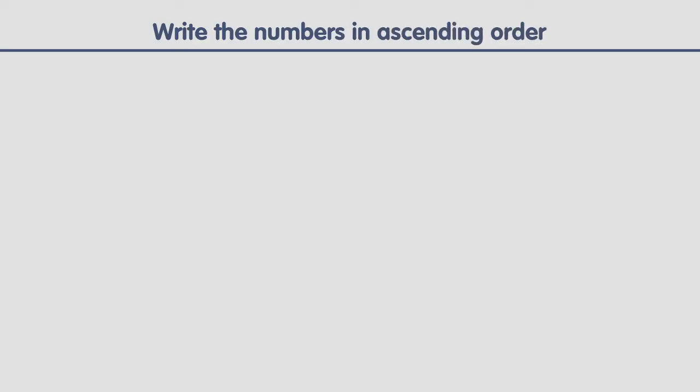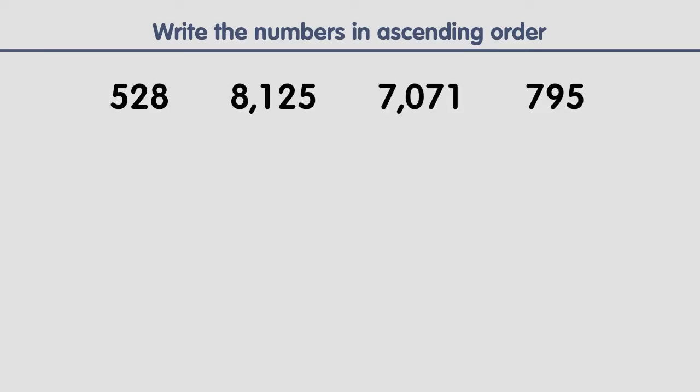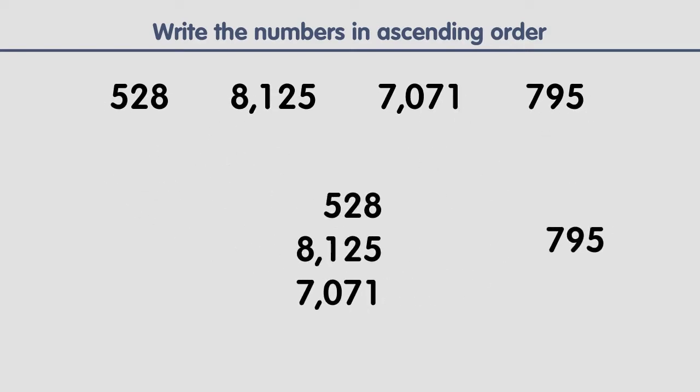Write the following numbers in ascending order. Ascending order means writing the numbers from smallest to largest. The first step is to write all the numbers one below the other. The second step is to make all the numbers have the same number of digits. For example, this number has three digits.